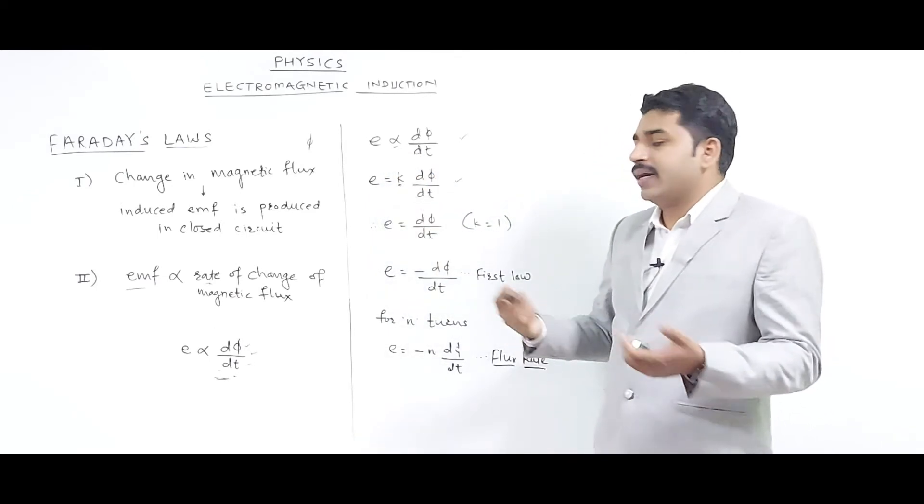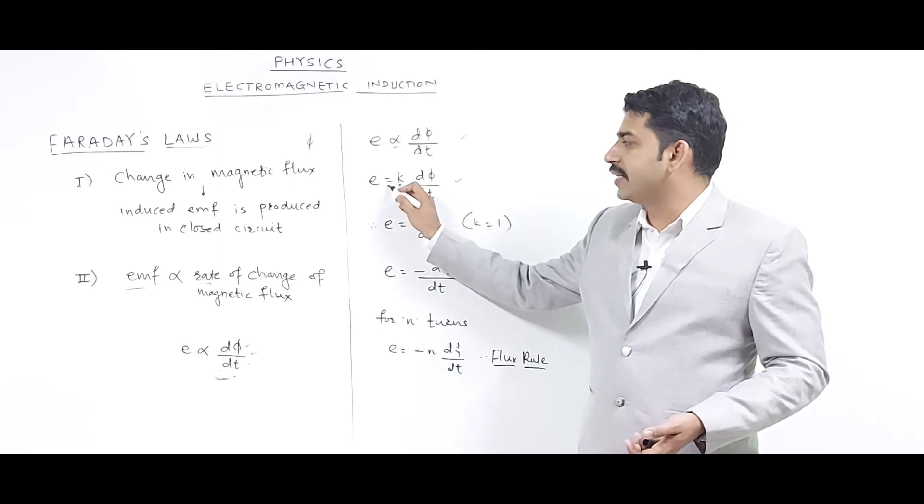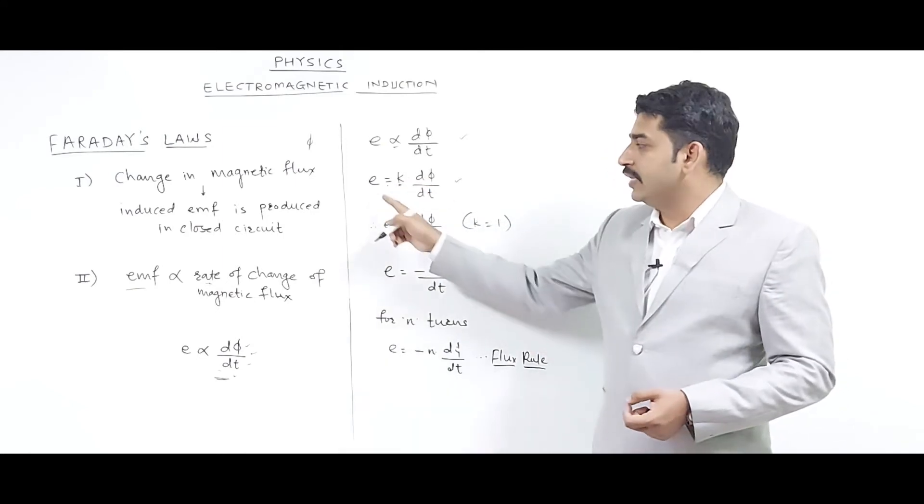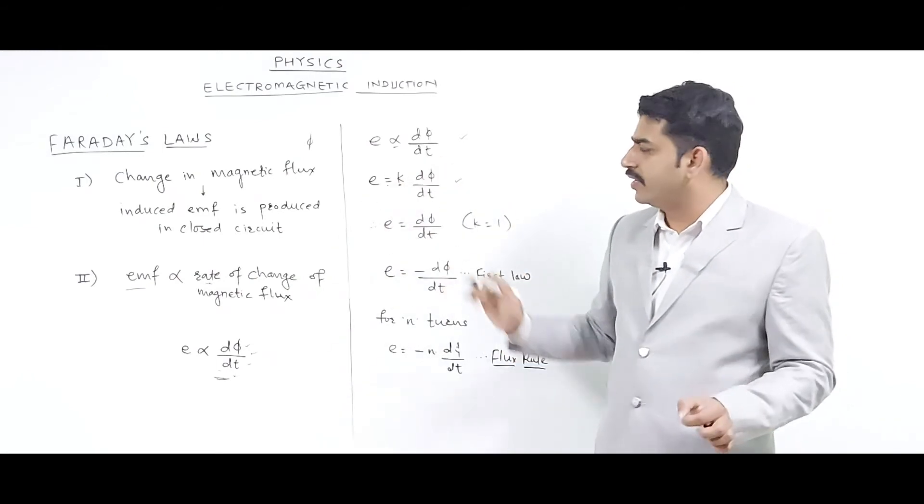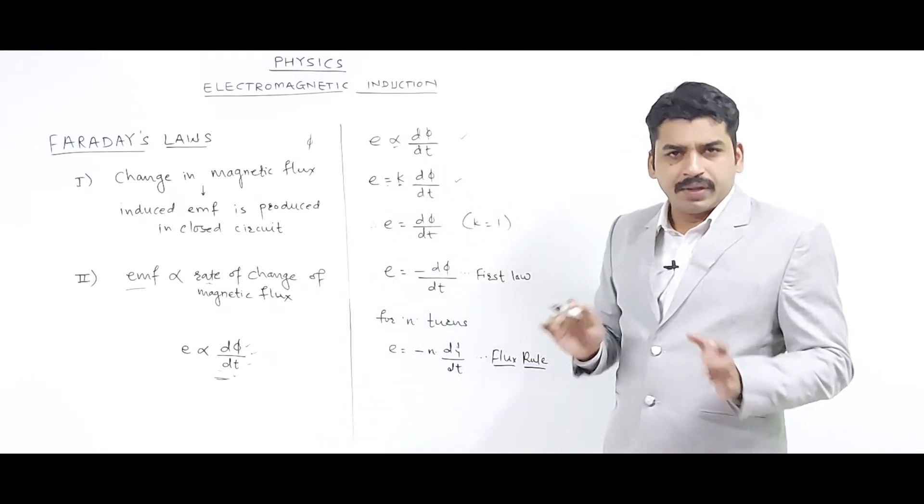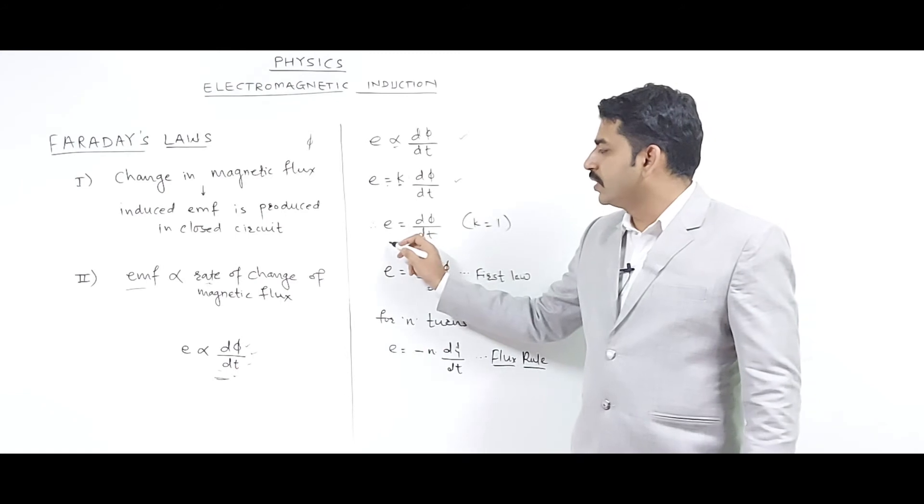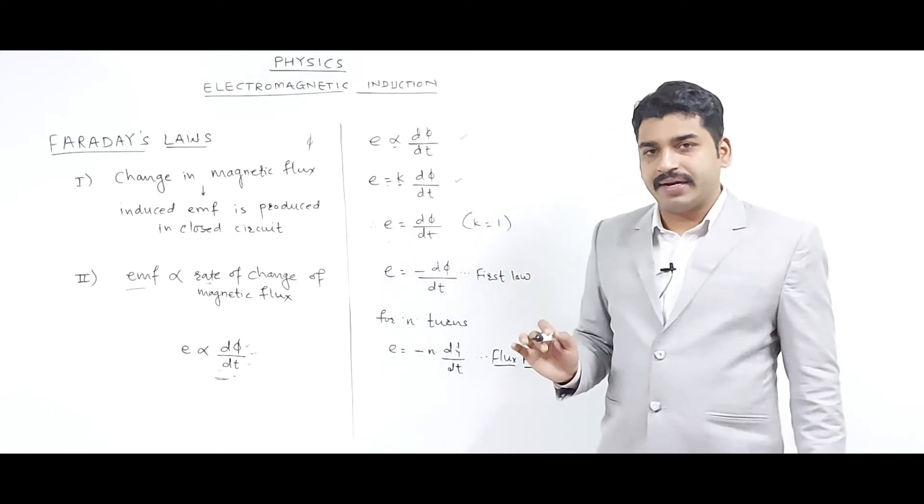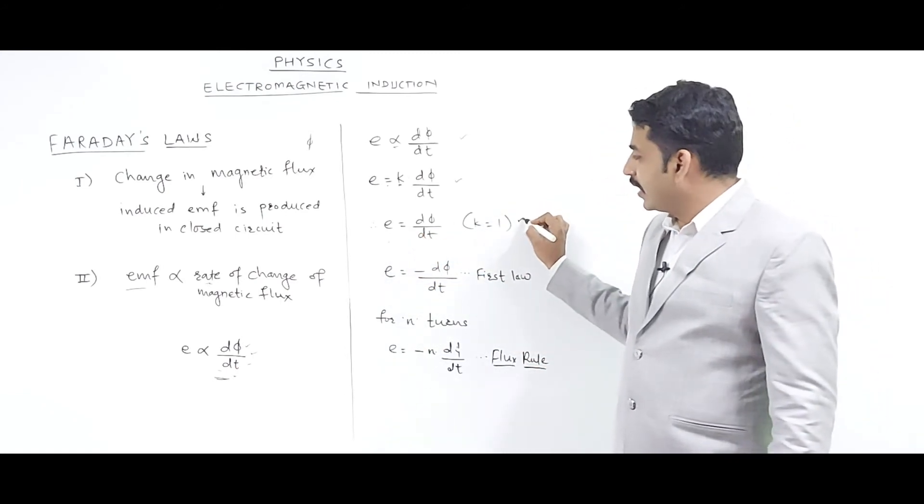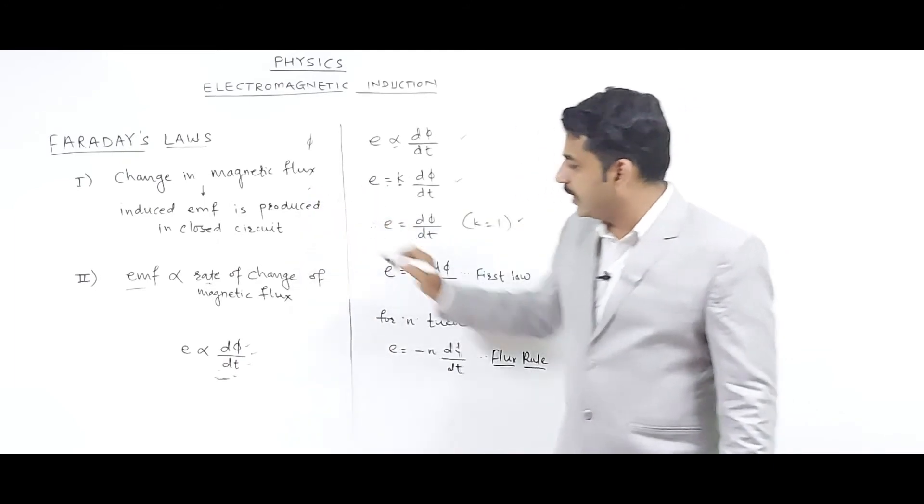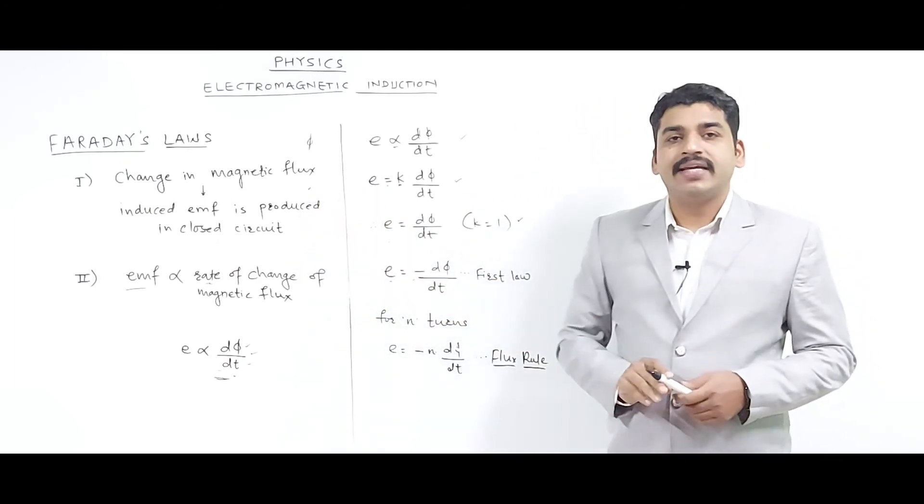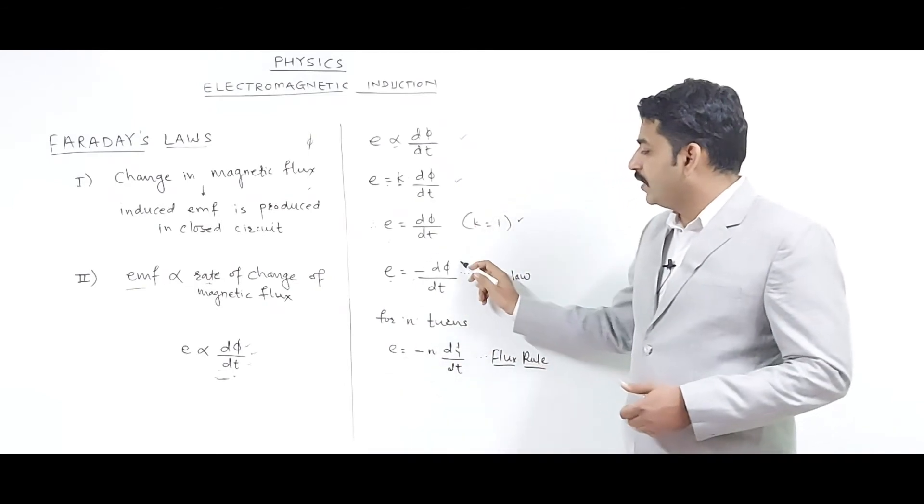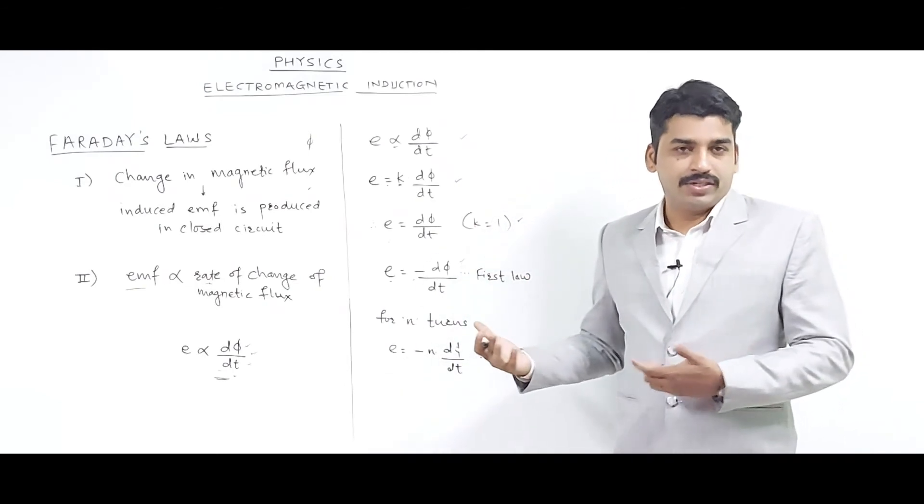For example, we take constant k, so the directly proportional sign is replaced by an equal sign. So e equals k times dΦ/dt. But since all the things are in SI units, we can say k is equal to one, so what we get is e equals dΦ/dt. But practically, if we relate with the first law, the direction of generated emf is always in opposite direction to that of the rate of change in magnetic flux.